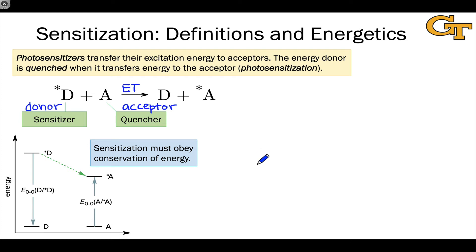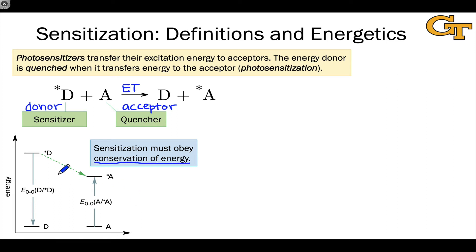As in all chemical processes, conservation of energy must be obeyed in a sensitization process. In practice, the excitation energy of the energy donor needs to be higher than the excitation energy of the acceptor. Endothermic energy transfer is not impossible — it's just kinetically very slow. So if an endothermic energy transfer process has negative delta G and is thermodynamically capable of taking place, generally speaking it will be so slow as to not be useful. This is the first key criterion for sensitization: it has to obey conservation of energy.